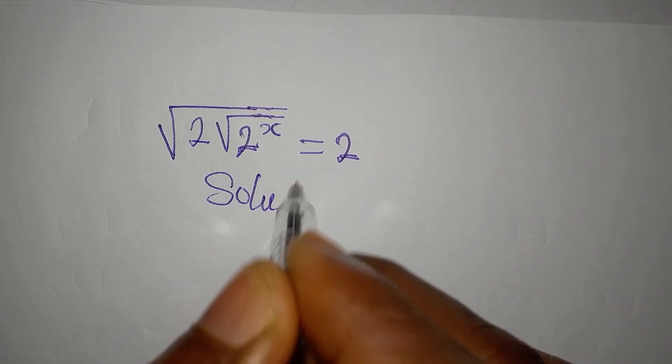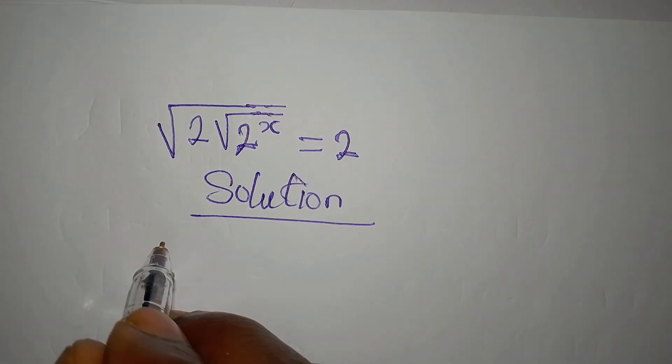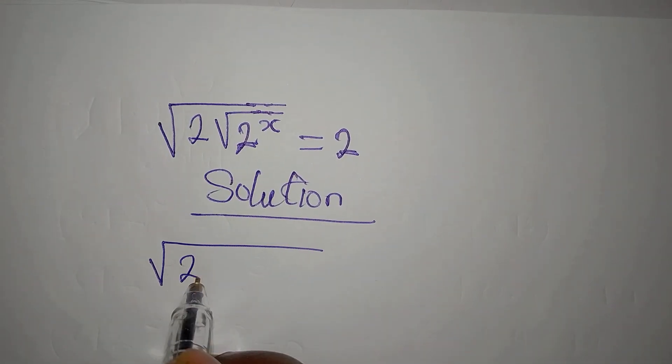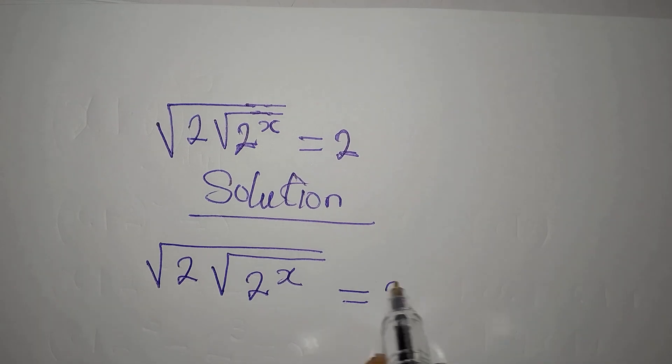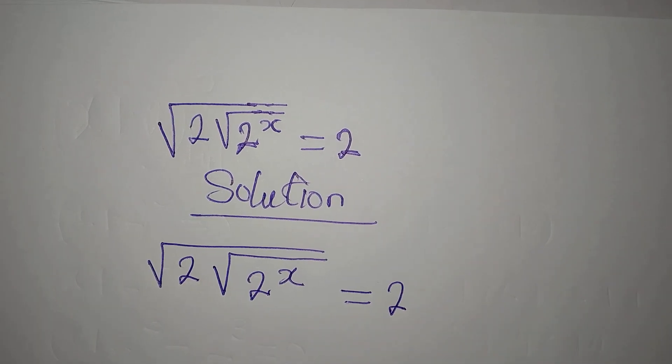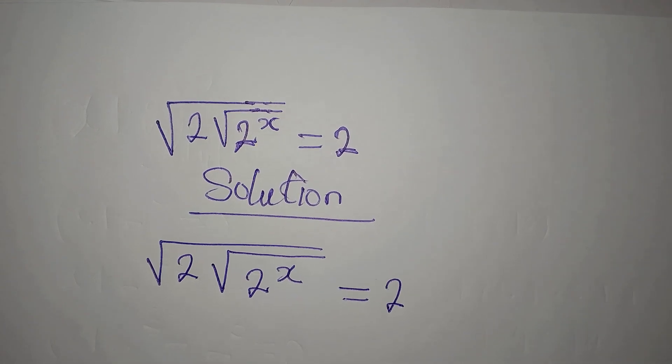Hi everyone, let's provide a solution to this problem: the square root of 2 square root of 2 to the power of x equals 2. If you're new here, subscribe so you can get more of my videos.